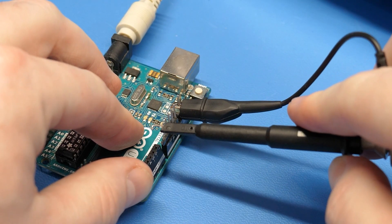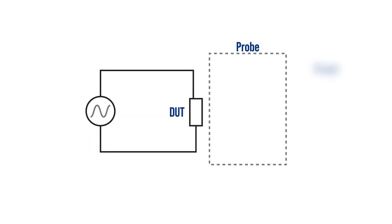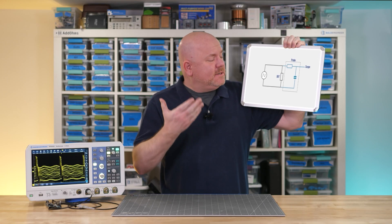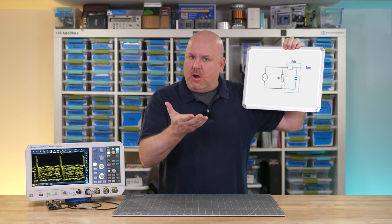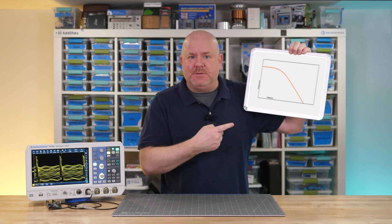When you attach a probe to a circuit it becomes part of the circuit and a simple model we can use for that probe is a capacitor and resistor. Now what does this circuit look like? An RC filter. And what do we know about RC filters? They have a frequency response.